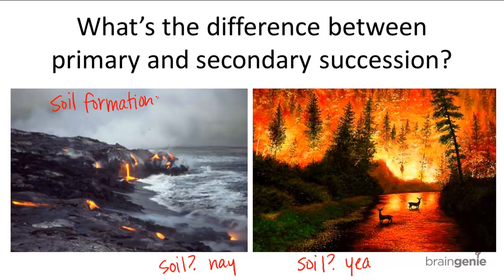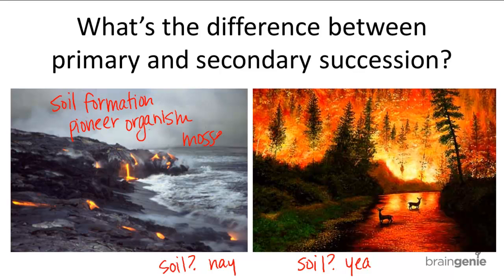Primary ecological succession can occur on a newly formed volcanic island or on a rock exposed from a receding glacier. The first organisms to colonize the area are called pioneer organisms — pioneers are the first types of people to colonize an area. So pioneer organisms are the first organisms to colonize a destroyed or newly formed land. These pioneer organisms are generally mosses and lichens, which are spore-bearing plants because spores are light and easier to carry by the wind.